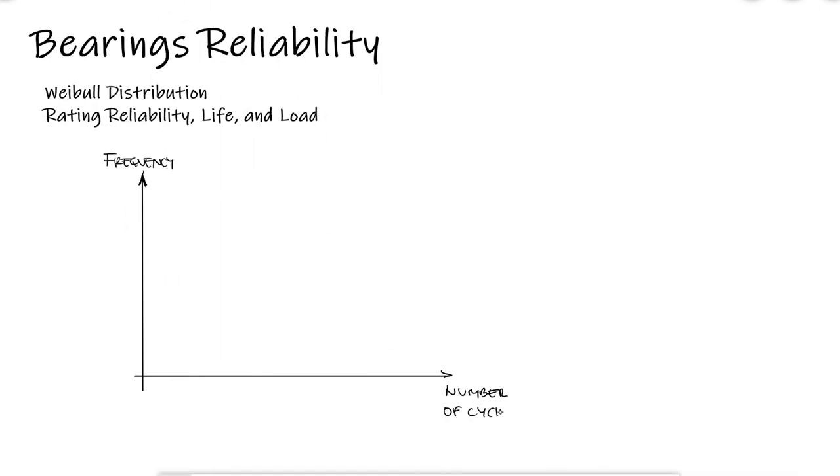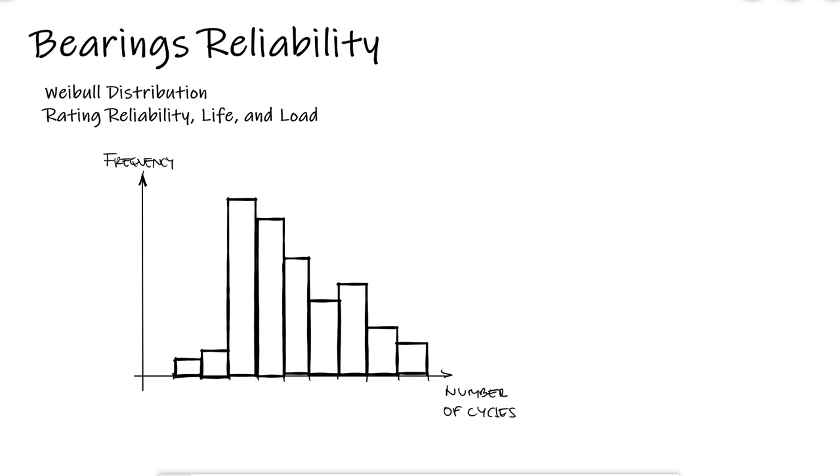If we create a histogram of the number of samples that fail for different numbers of cycles, we'd see that the range with the highest value is not right in the center like it would be for a normal distribution. There are a lot more samples that fail for a number of cycles higher than the number with the highest value.